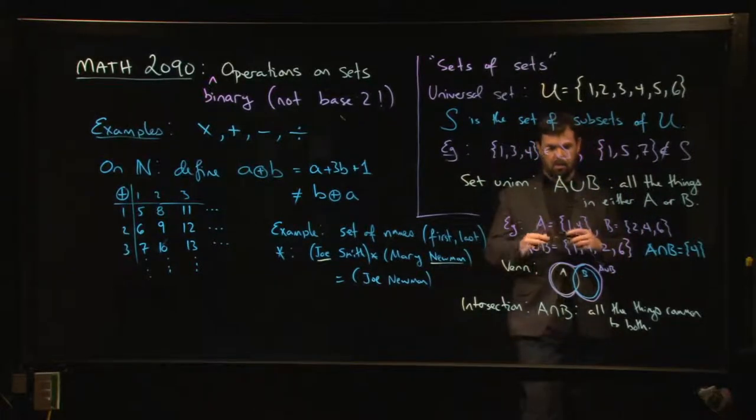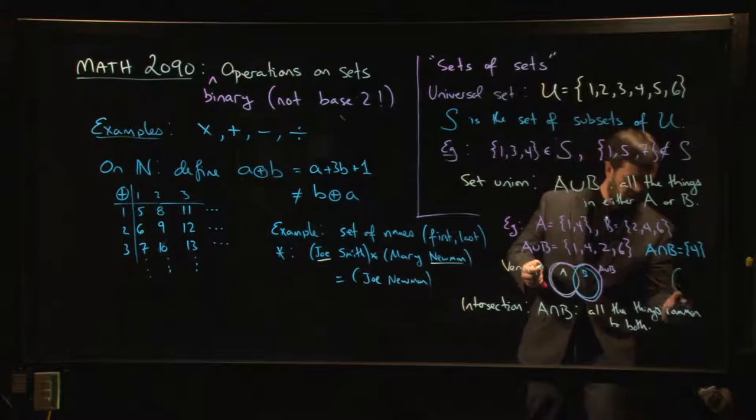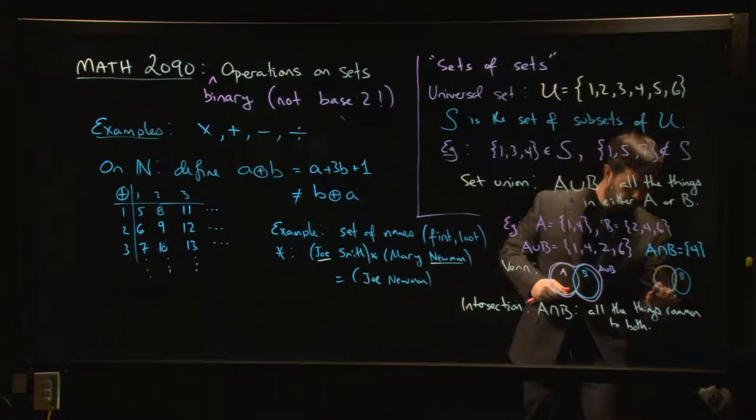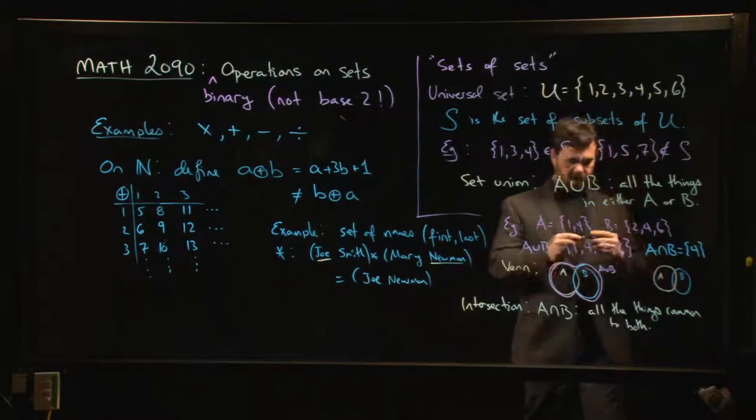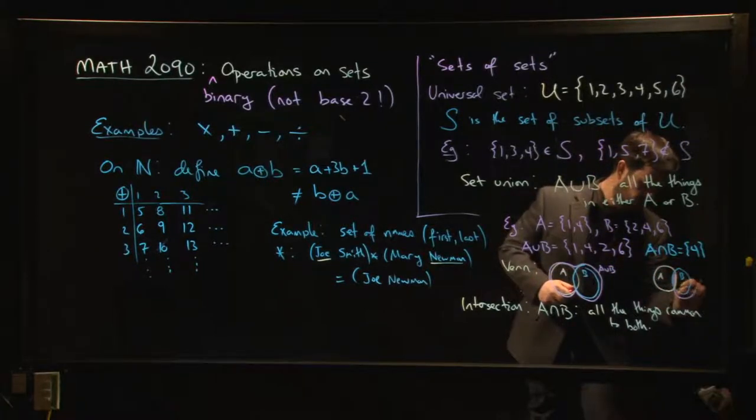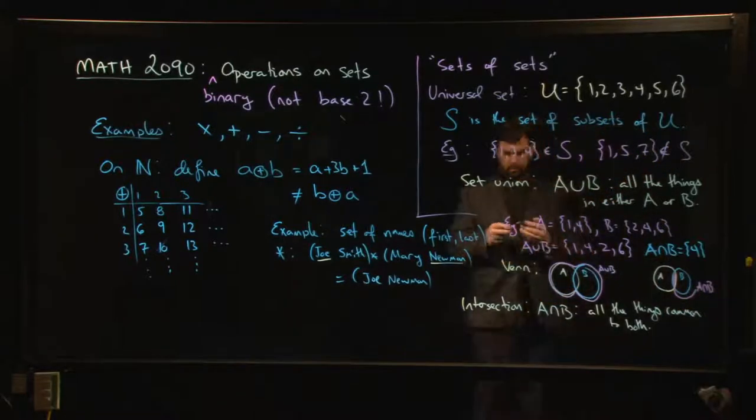If you wanted to think in terms of a Venn diagram, if this again is B and this is A, the intersection is where they overlap. So the intersection is in here - A intersect B.